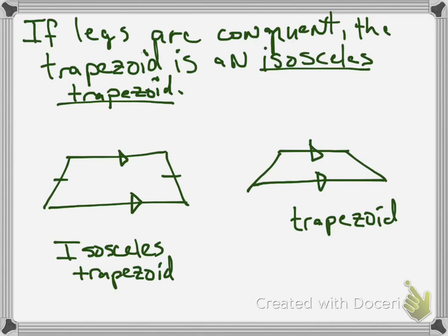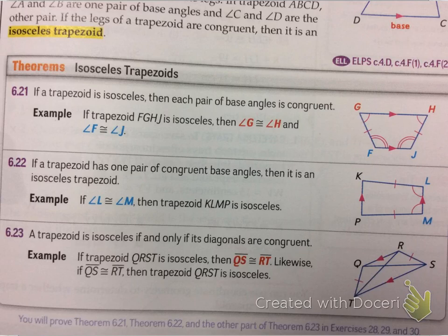So, are there some special properties for an isosceles trapezoid? Well, yes, there is. And here they are. So, an isosceles trapezoid is, a trapezoid is isosceles, then each pair of its base angles are congruent. So kind of keep that in mind. So if we know that an isosceles trapezoid is, an isosceles trapezoid,